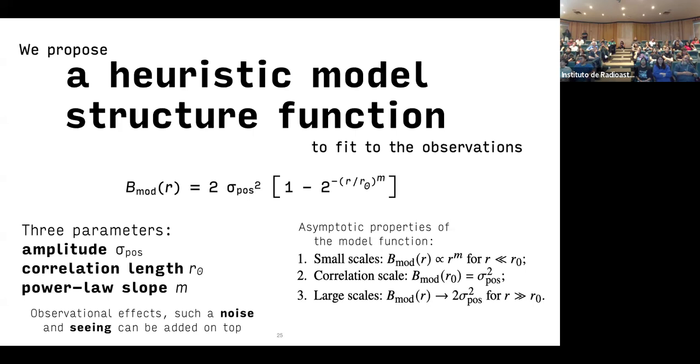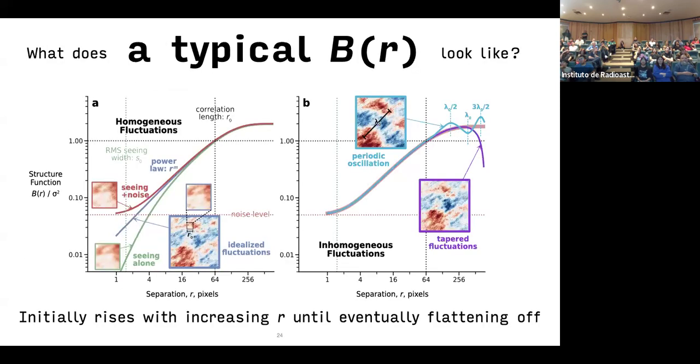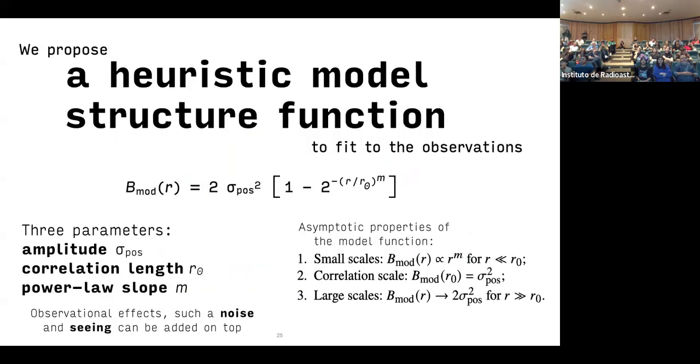What happens with this function is that at small scales, it increases as a power law up to the correlation scale R0. That's the scale on which this structure function is equal to the variance in the velocity. And then at large scales, it turns over and it saturates to the constant value of two times the variance.